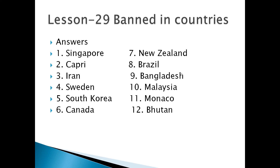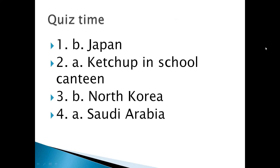Now quiz time. Number 1: which country has recently lifted its 67-year-old ban on dancing in clubs? Japan. Number 2: France is the first country to ban ketchup in school canteens. Number 3: the country which has imposed a ban on wearing blue jeans — North Korea. Number 4: the country where movie theaters are banned to preserve the rich culture — Saudi Arabia.